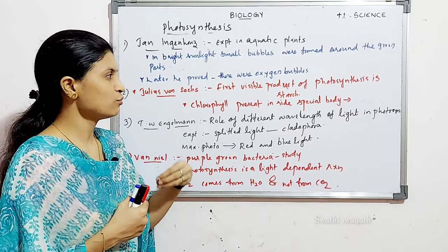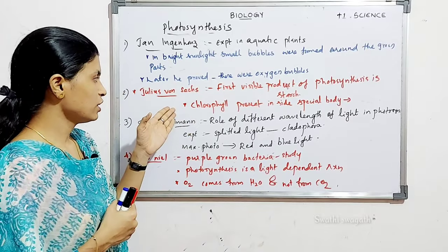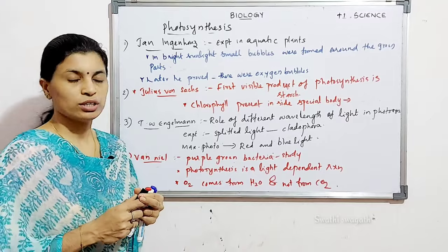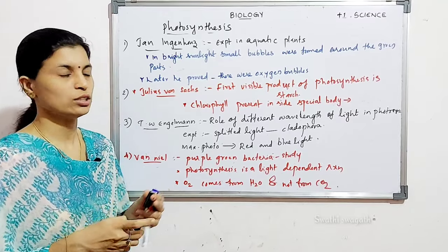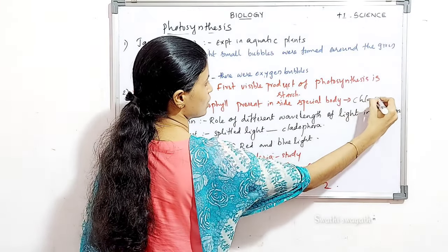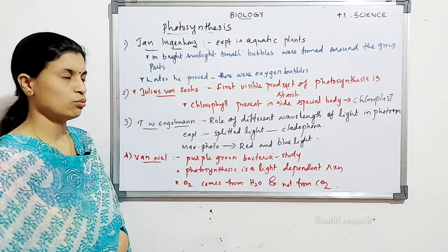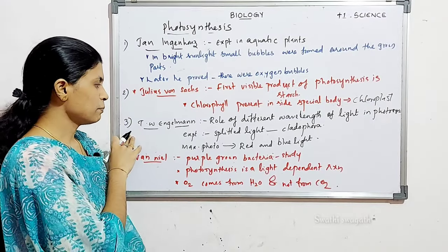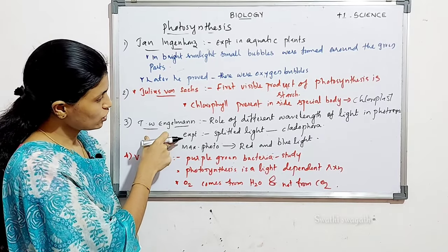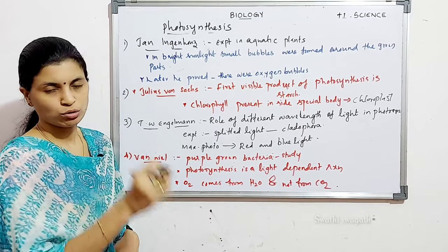Julius Von Sachs also proved that chlorophyll is present inside a special body called the chloroplast. Chloroplast is not the same as chlorophyll — chlorophyll is the pigment inside the chloroplast. The next scientist is T.W. Engelmann, who studied the role of different wavelengths of light in photosynthesis.